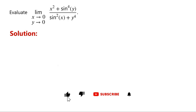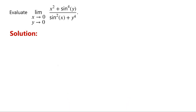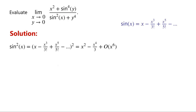We notice that the limit contains sine of x and sine of y. The Taylor series expansion for sine of x about x equals 0 is: sine of x equals x minus x cubed over 3 factorial, plus x to the power of 5 over 5 factorial, and so on. So sine squared of x equals x squared, minus x to the power of 4 over 3, plus big O of x to the power of 6, which can be written as x squared plus big O of x to the power of 4.